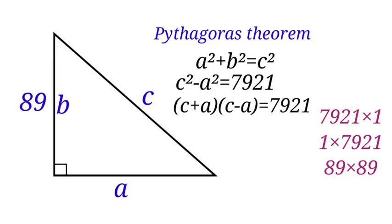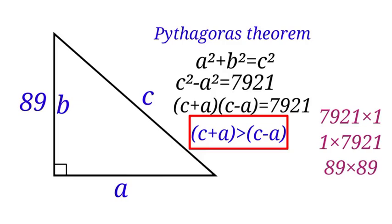Now, if we substitute numbers into this, into C plus A and C minus A, we will note that C plus A will always be greater than C minus A. Let us check the product of factors that satisfy this condition that C plus A is greater than C minus A.